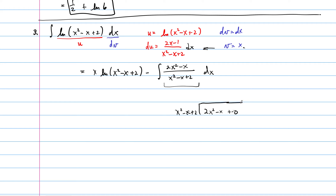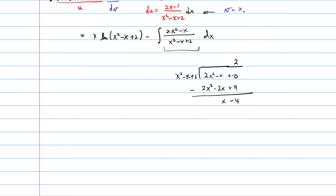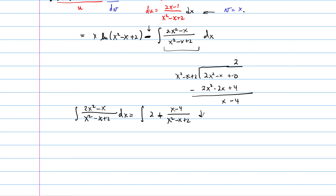Performing long division of 2x squared minus x by x squared minus x plus 2: multiplying the divisor by 2 gives 2x squared minus 2x plus 4, and subtracting yields remainder x minus 4. So the integral of (2x squared minus x) over (x squared minus x plus 2) dx becomes the integral of 2 plus (x minus 4) over (x squared minus x plus 2) dx.